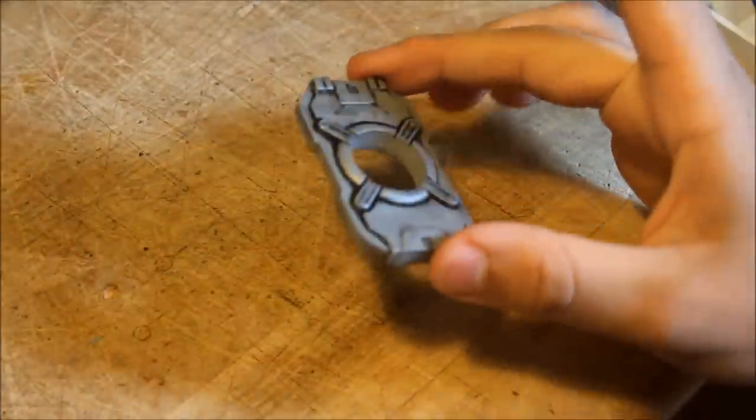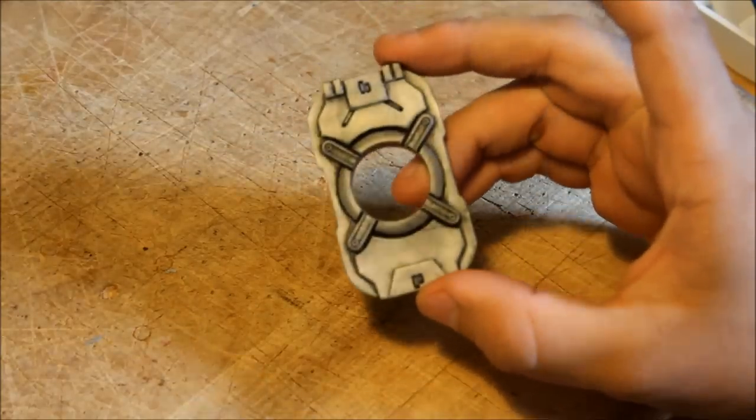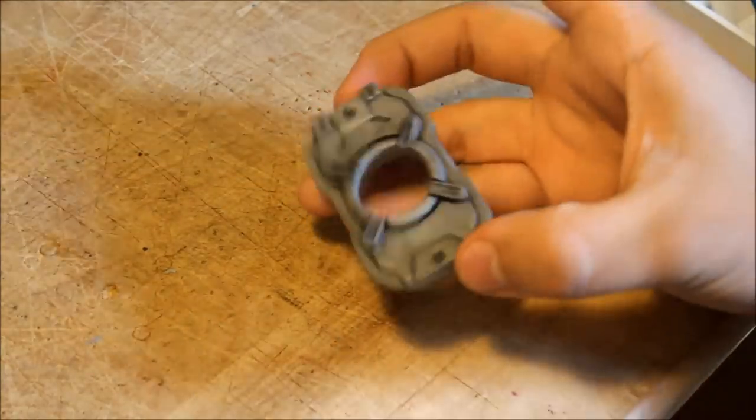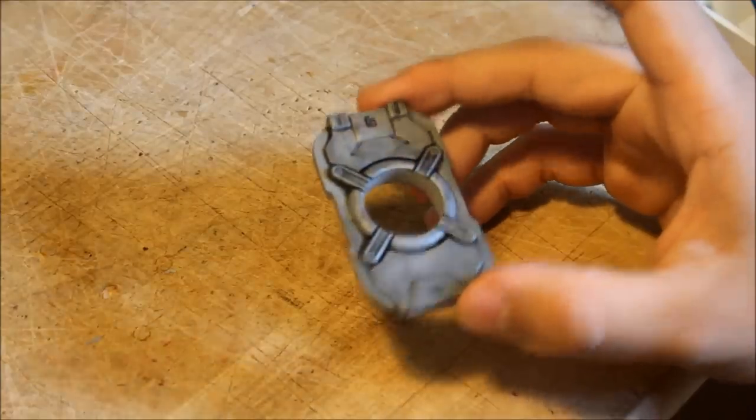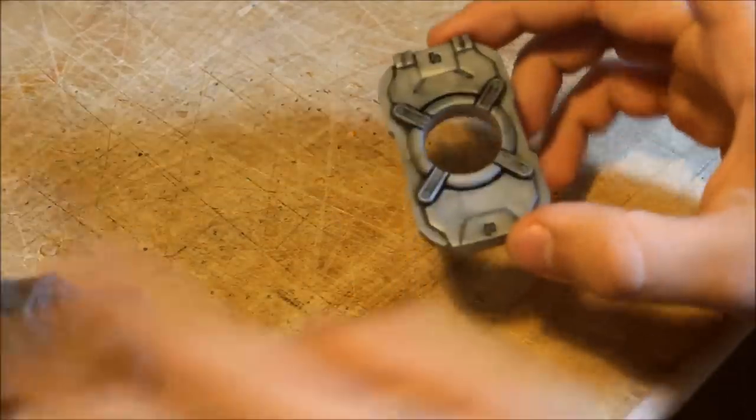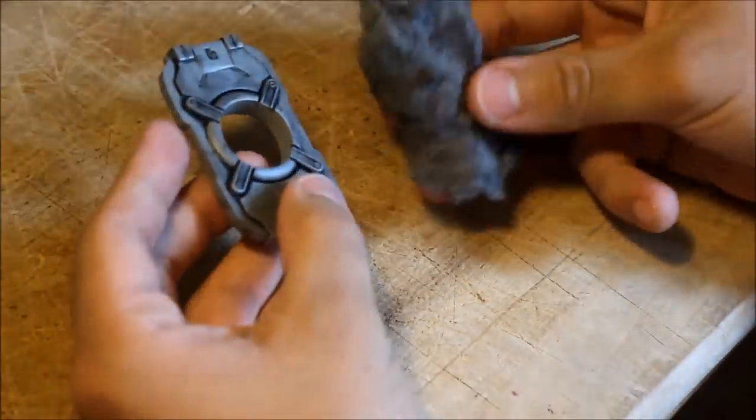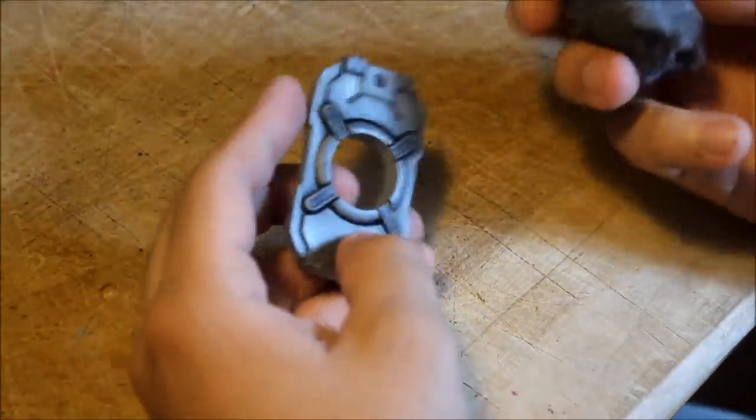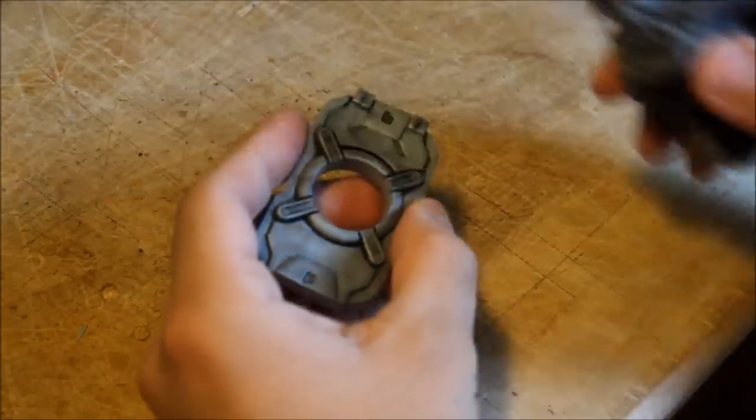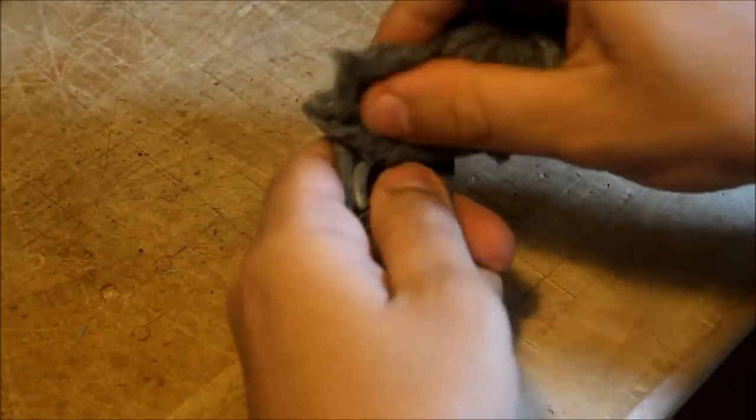I finished the weathering on this. You might be able to see the black outlines in the detail areas on both sides. So to finish it off I'm going to use my steel wool and buff it. You don't need to rub it very hard, you should be able to see the results pretty much instantly.